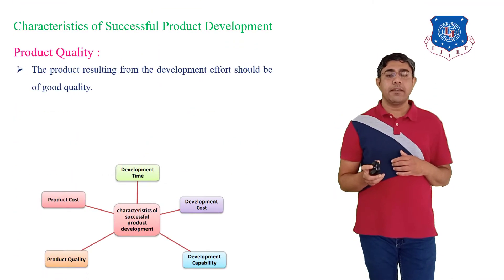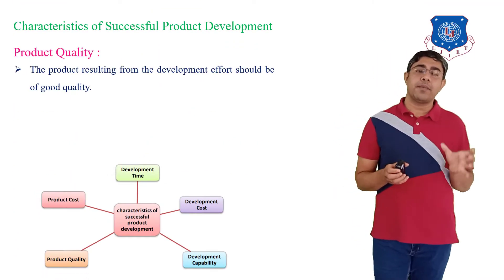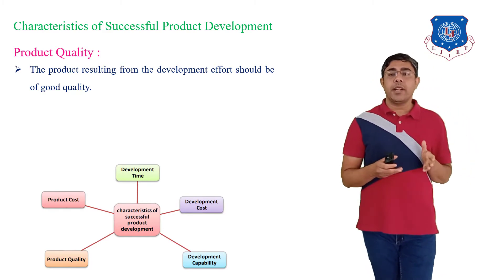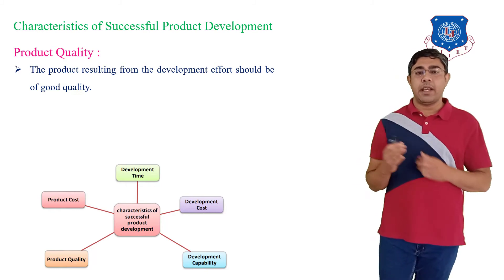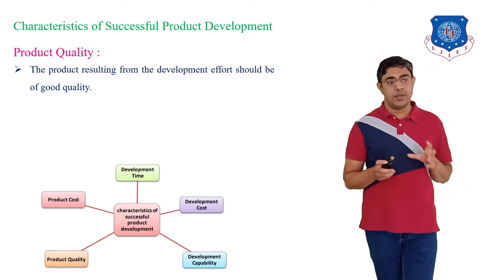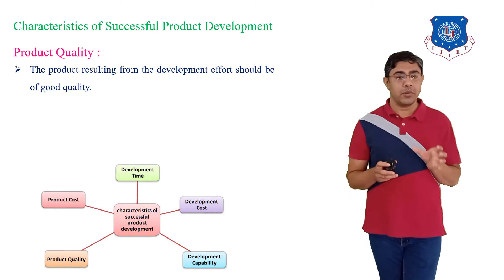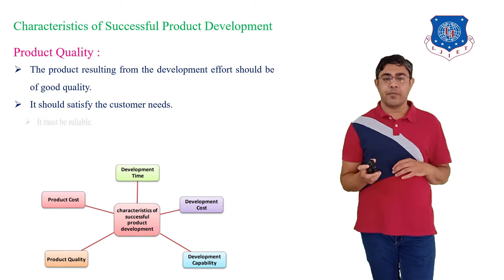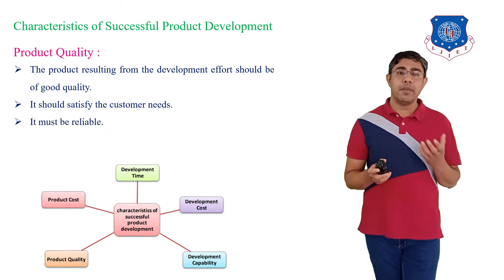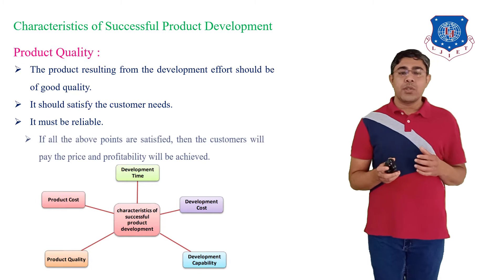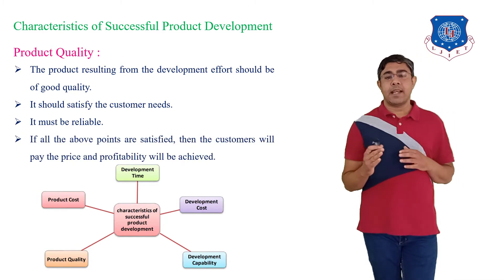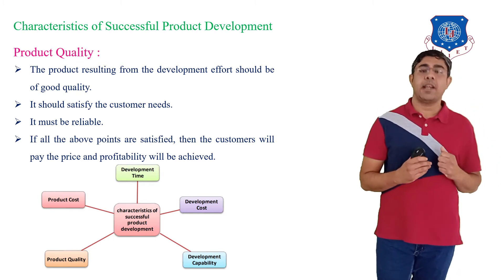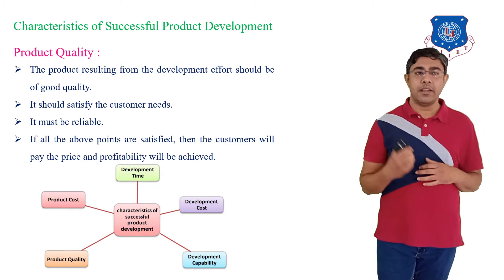The first specific dimension is product quality. The product resulting from the development effort should be of good quality. Your product should satisfy the customer needs and must be reliable. So if all these points are satisfied, then the customer will pay the price and profitability will be achieved.